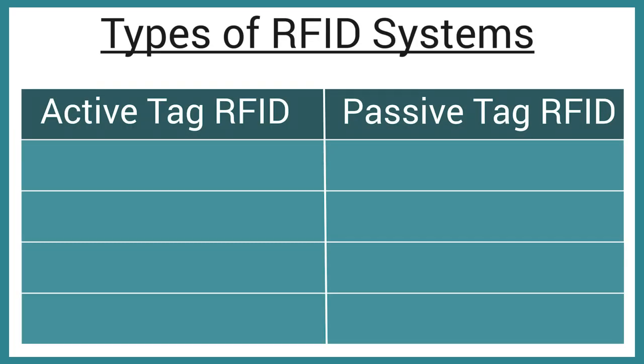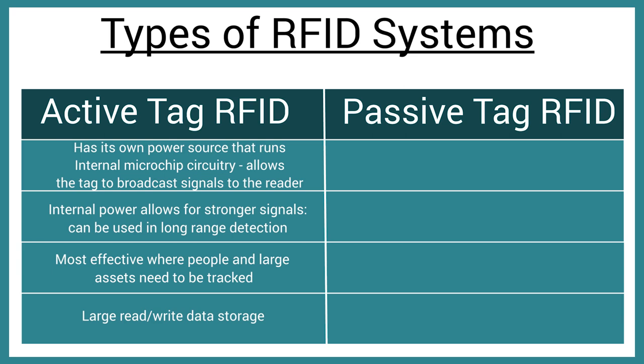The two types of RFID systems are categorized by the tag type used: active versus passive. An active tag RFID has its own power source connected to the tag's internal circuitry. This allows the tag to constantly broadcast signals to the reader. The internal power allows for a stronger signal transmission, making it more effective in long-range detection.